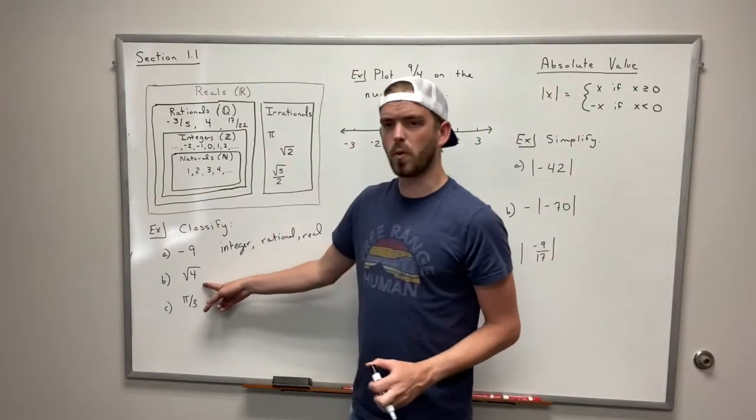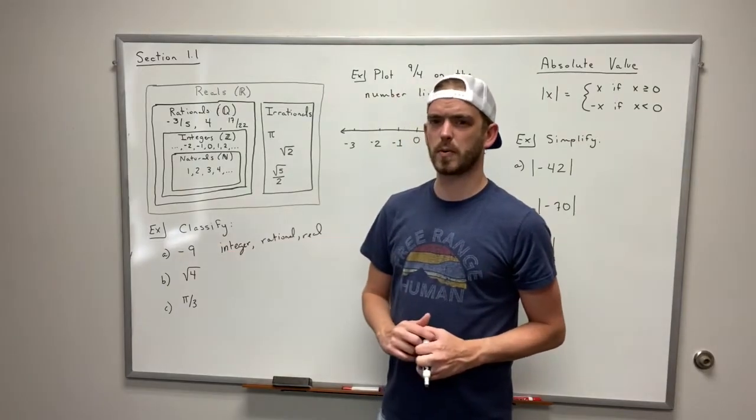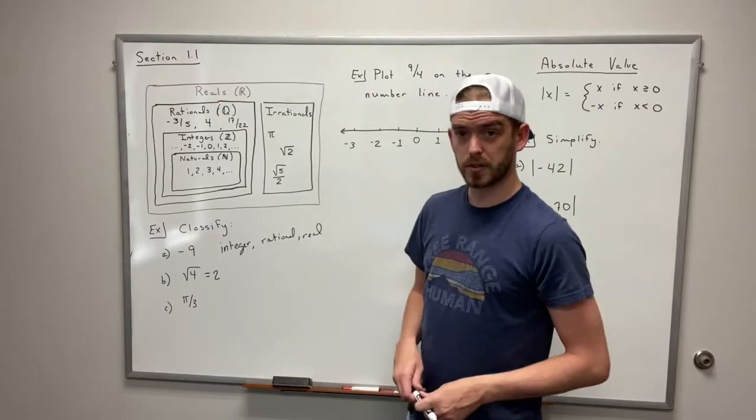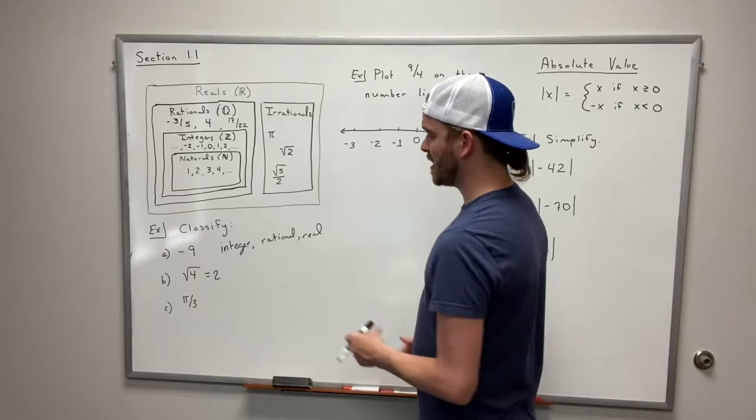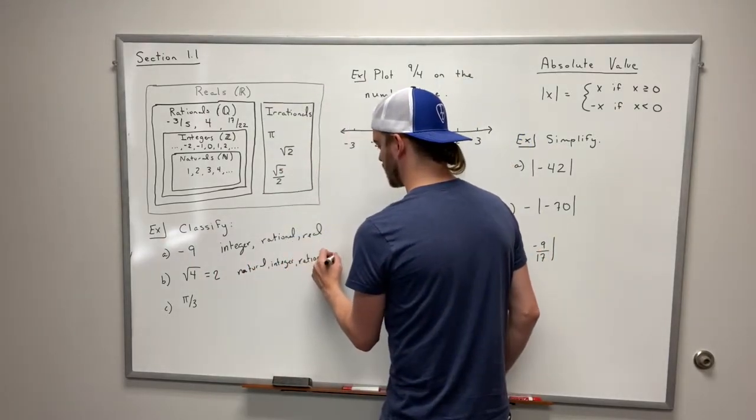We look at the square root of 4. Now this one's a little bit tricky because can we simplify the square root of 4? We can. The square root of 4 is equal to 2. So when you see 2 we know that that is a natural number. It's actually listed here as one of our examples. So this is a natural, it's an integer, it's a rational, and it's a real.